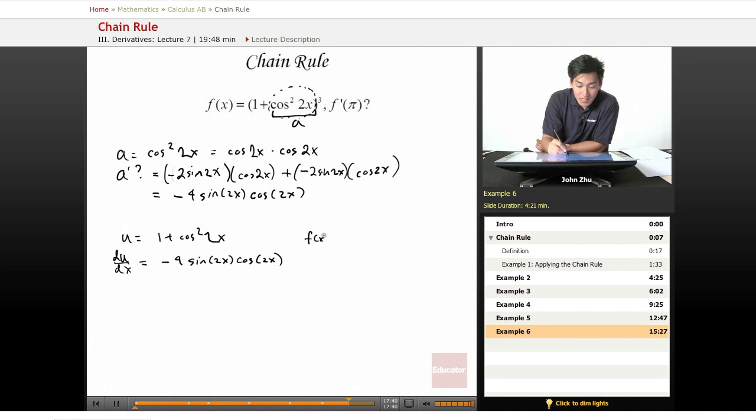And f(x) becomes, well, f(u) is u³, so f'(u) = 3u².